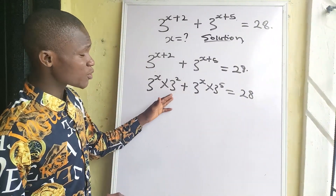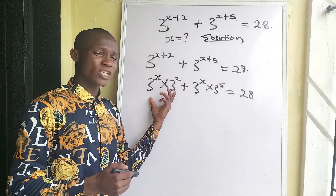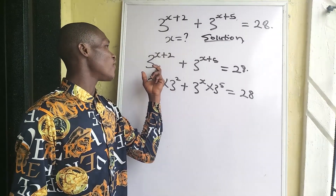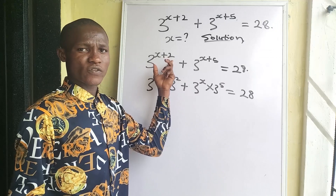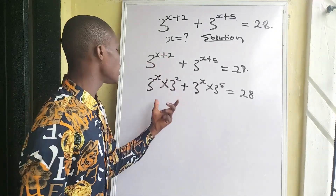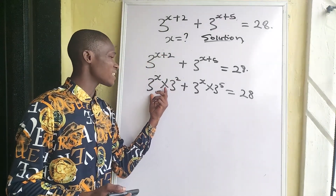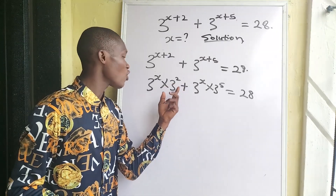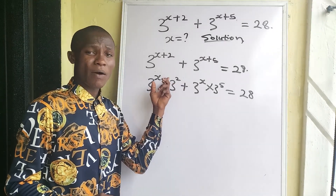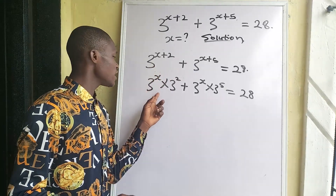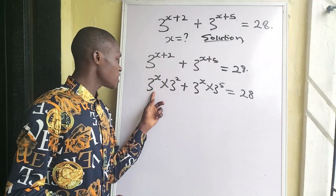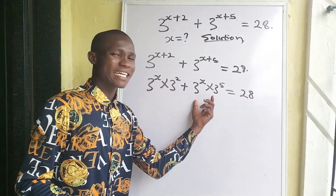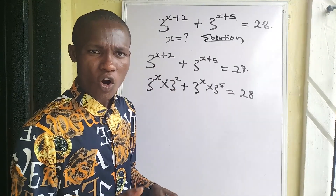We are applying the principle of indices, which says if we have a value like 3 to the power of x plus 2, we can break that into 3 to the power of x times 3 to the power of 2. When we pick the base and add the powers, we get back 3 to the power of x plus 2. This is exactly the principle of indices.